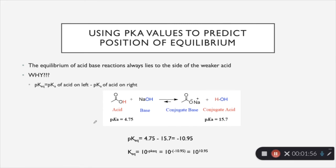In this case, we've already found the pKEQ to be negative 10.95. So if we take 10 to the negative negative 10.95, we get 10 to the 10.95. And so as you know, 10 to the 10.95 is a very, very large number.